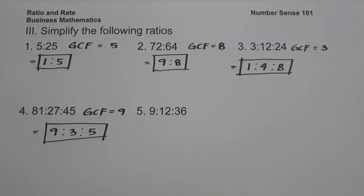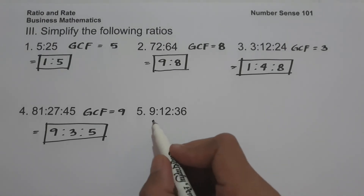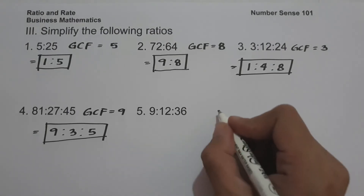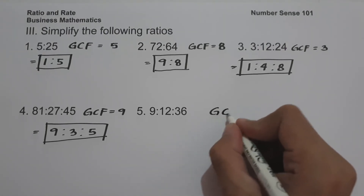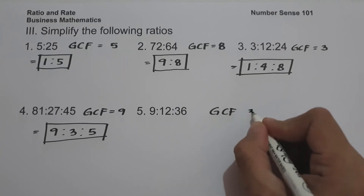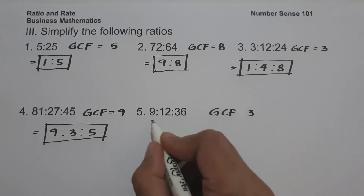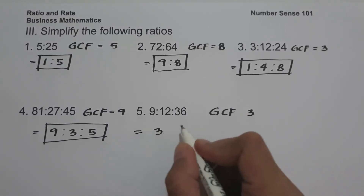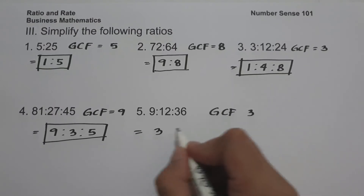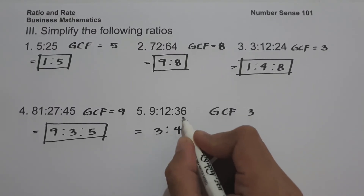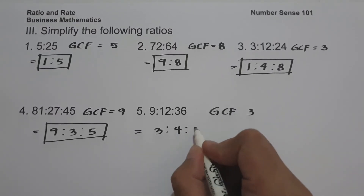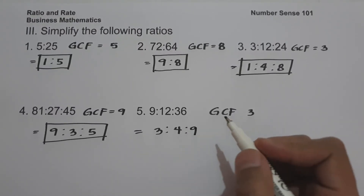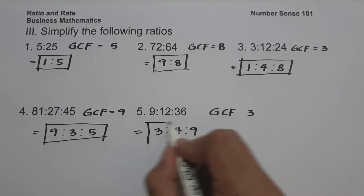On number 5, we have 9 is to 12 is to 36. The GCF of 9, 12, and 36 is 3. 9 divided by 3 is 3, 12 divided by 3 is 4, and 36 divided by 3 is 9. Therefore the simplified ratio is 3 is to 4 is to 9.